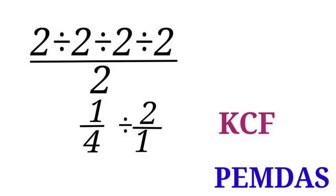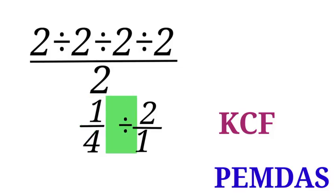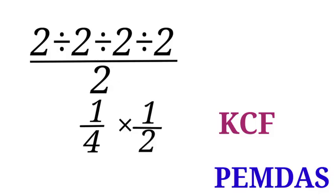Next, we apply KCF again: K — keep one over four; C — change the division sign to multiplication; F — flip two over one. So we have one over four times one over two, which equals one over eight. Thank you for watching — kindly like, share, and subscribe to my YouTube channel. Bye!